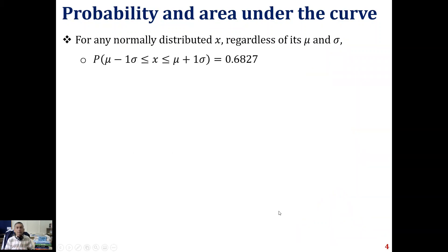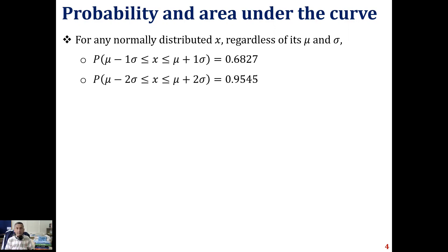An interesting property of the normal distribution is that for any normally distributed variable x, regardless of its mean mu and standard deviation sigma, the probability that the variable will take values within one standard deviation on either side of its mean is 0.6827. In other words, 68.27% of the values lie within one standard deviation of the mean. Similarly, 95.45% of the values lie within two standard deviations and 99.73% lie within three standard deviations of the mean.